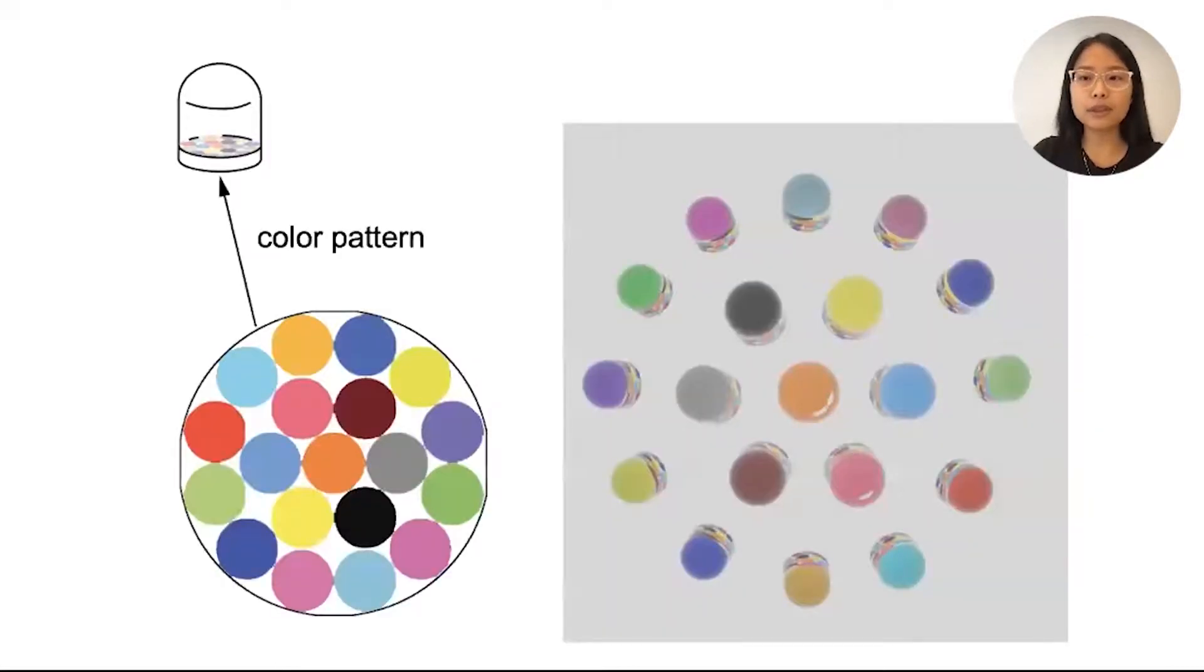As a result, our selected lens geometry supports 19 viewpoints. Here, we back it up with the rendered image of the same lens showing 19 different colors. This, however, is a theoretical value, and it assumes that the lenses are fabricated perfectly.